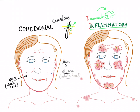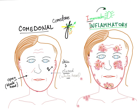Propionibacterium acnes is an anaerobic gram-positive bacterium. Clinically, there are closed whiteheads and open blackheads, elevated papules, pustules when pus is secreted, and sometimes cystic lesions which are fluid-filled cavities. Comedonal acne occurs in adolescence due to follicle clogging, while inflammatory acne is an immunological reaction to the bacterium.